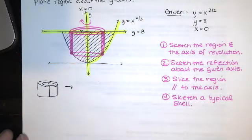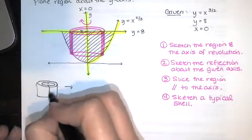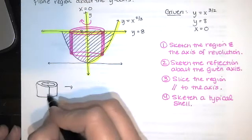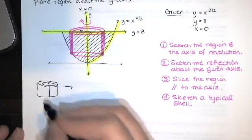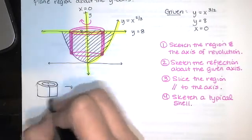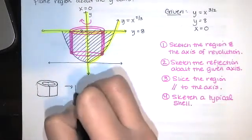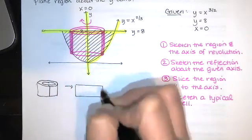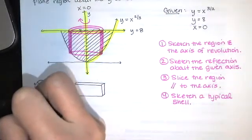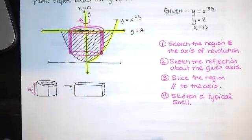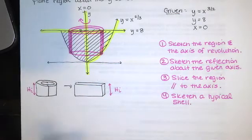So we slice the region parallel to the axis, and then we sketch a typical shell. And that shell is going to help us find all the pieces that we need for our volume. Imagine you've got all of these shells nested within shells. You want to think of these like Russian nesting dolls. And you've got one shell nested inside of another shell nested inside of another shell. And if I can find the volume of one of those shells, then I can find the volume of the whole thing. So there's my typical shell, it's not a great picture, but that's okay.